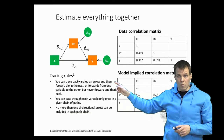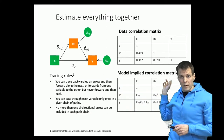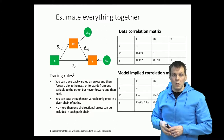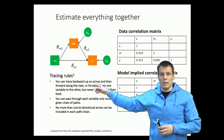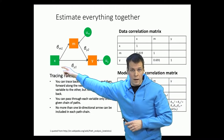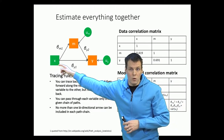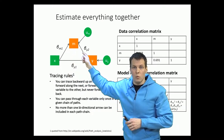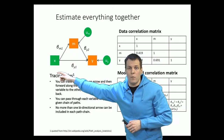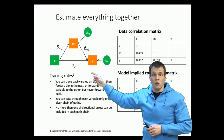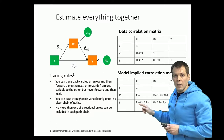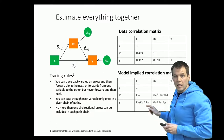I will be using the correlation metric here for simplification, but in practice we work with covariances nearly always. So we look at, for example, the correlation between x and y. We find that we can go from x to y using two different paths: through m, and directly. That gives us two elements — the mediation effect beta_m1 times beta_y2, plus the direct effect beta_y1.